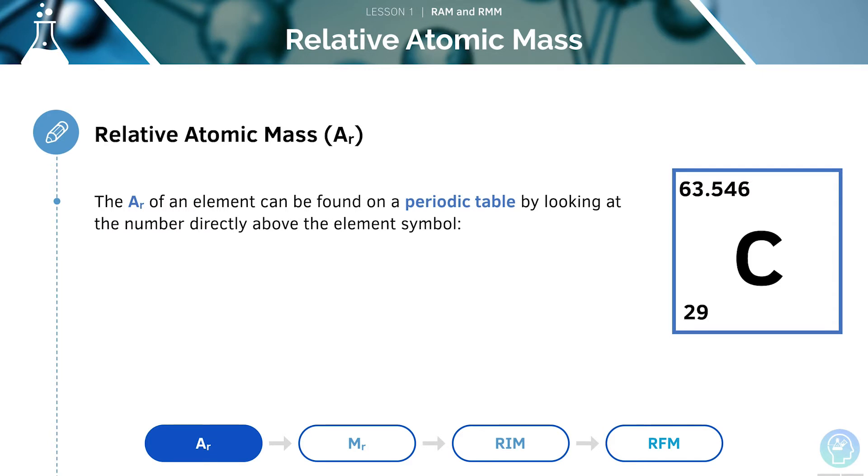You can find the relative atomic mass of an element on a periodic table by looking at the number directly above the element symbol. The AR of copper would be 63.5.